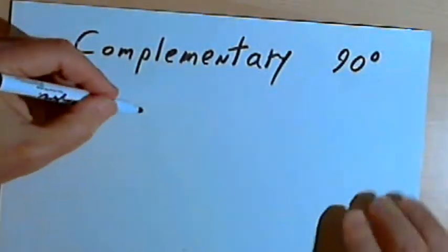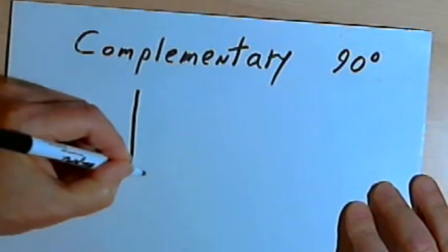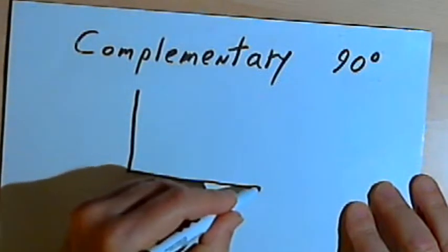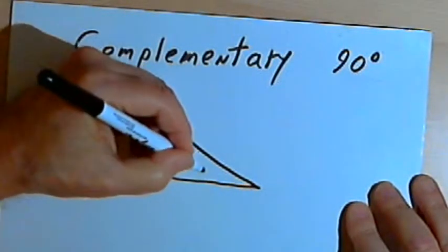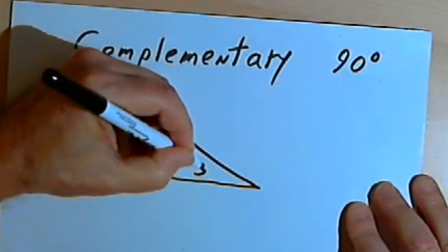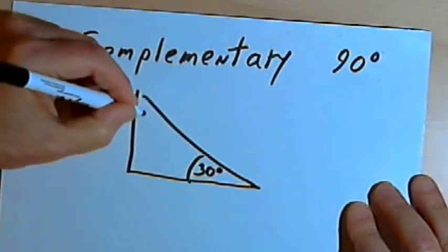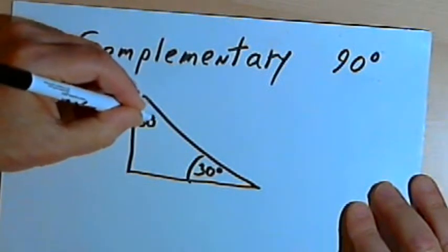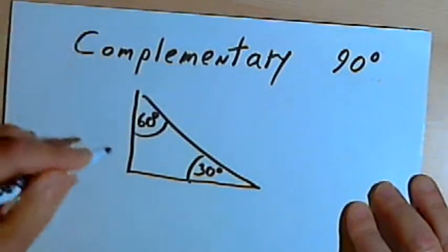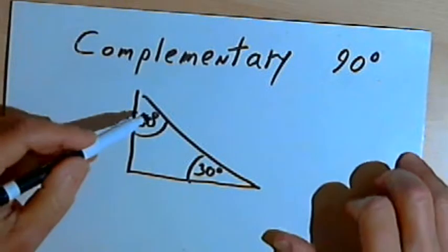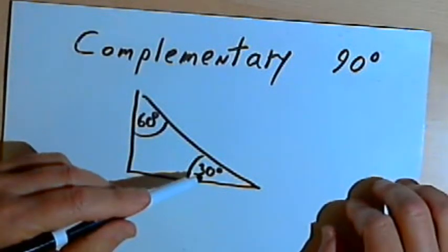So I might have a triangle, and one of the angles of the triangle might be 30 degrees and another angle might be 60 degrees. Even though they're not adjacent, those two angles are still complementary angles.